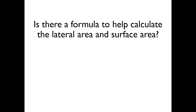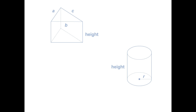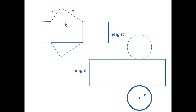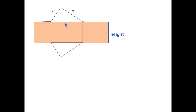Is there a formula to help calculate the lateral area and surface area? Yes. There are general formulas for both right prisms and cylinders. To determine what those are, look at the net of each figure. The lateral area is the area of the large rectangle for both the prism and cylinder. For the prism, the length of this rectangle is the perimeter of the base.